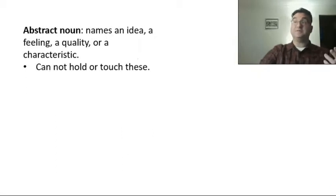On the other hand, abstract nouns are nouns that name an idea, a feeling, a quality, or a characteristic. These are things you cannot hold or touch, and that can be confusing, so we practice.